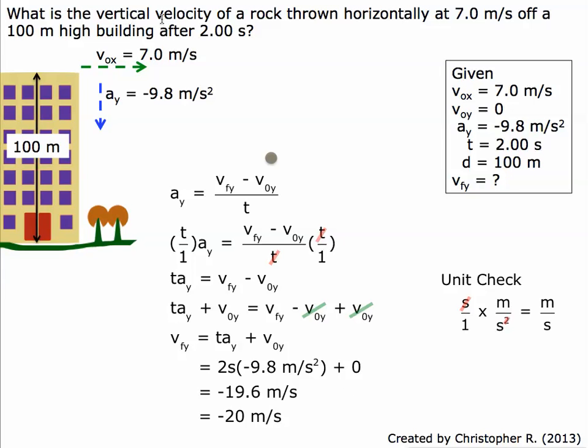What is the vertical velocity of a rock thrown horizontally at 7.0 meters per second off a 100 meter high building after 2 seconds? It's negative 20 meters per second, the velocity going in the downward direction.